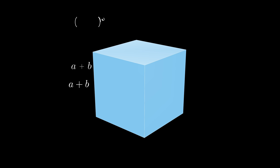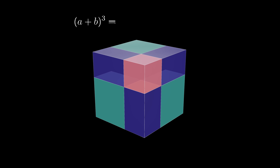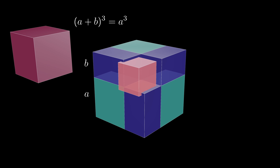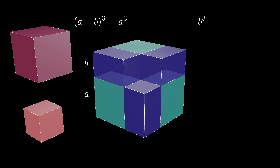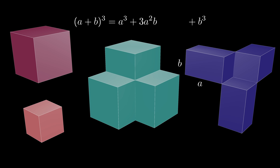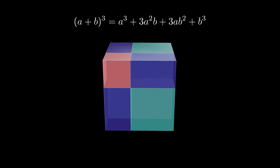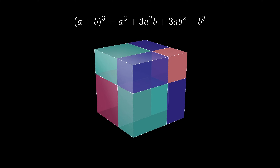We can extend the distributive property to higher dimensions. Suppose we have a cube with side length A plus B; one way to compute its volume is (A+B)³. Decomposing the sides into A and B breaks the cube into eight pieces: two smaller cubes and six rectangular prisms, three each of two types. We get an A³ cube, a B³ cube, three A²B cuboids with volume 3A²B, and three AB² cuboids with volume 3AB². So (A+B)³ = A³ + 3A²B + 3AB² + B³.